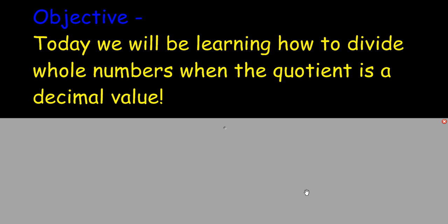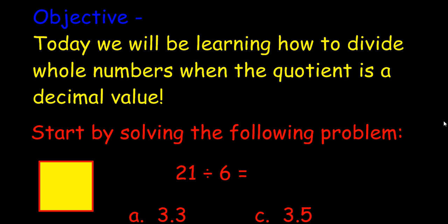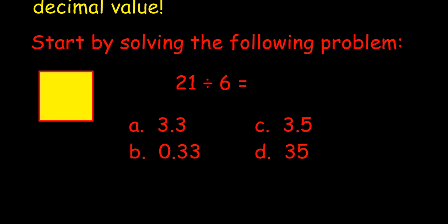And again, you should always still use estimation to make sure your answer is reasonable, and then check your work at the end by multiplying the divisor times the quotient to get the dividend. Let's start with a practice problem. See if you can solve the following problem: 21 divided by 6 equals. Go ahead and key in your answer with a clicker or write it down under a piece of paper.